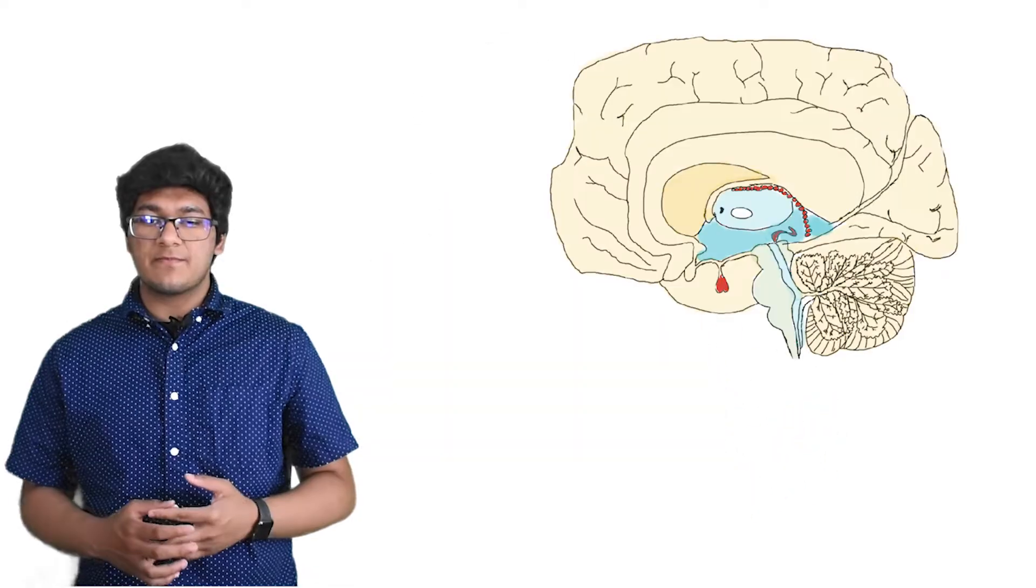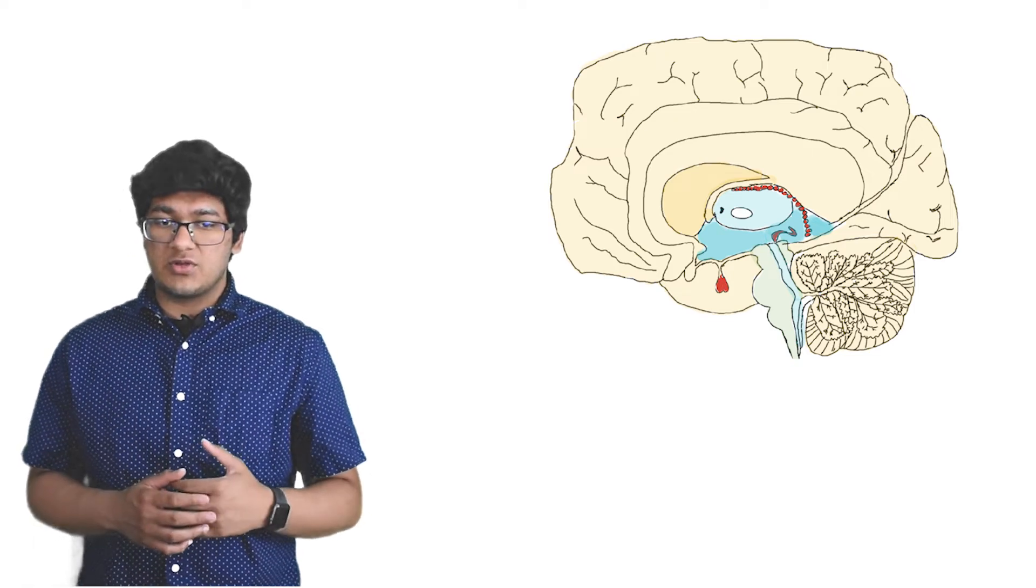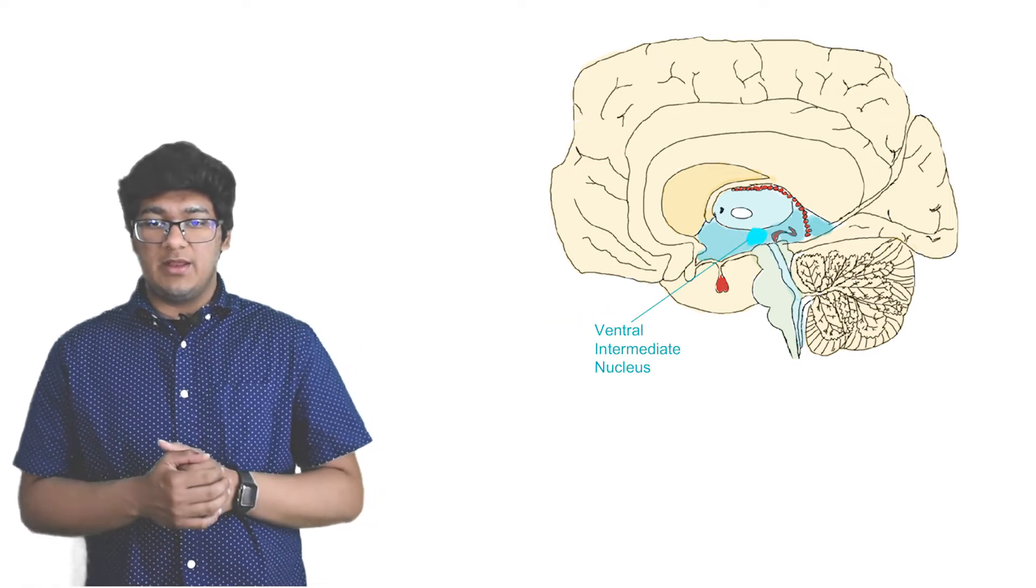So what we've looked at so far is just scratching the surface of DBS and its possible neuromodulation treatments. Other movement disorders can be treated by stimulating the subthalamus or ventral intermediate nucleus.